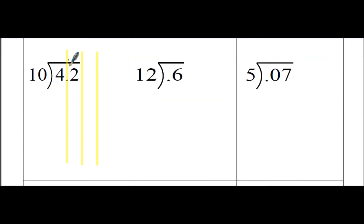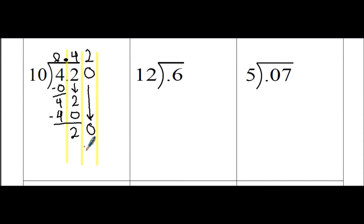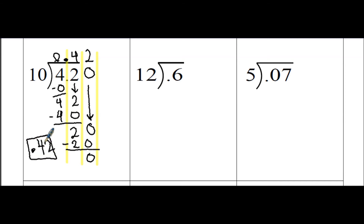10 is already a whole number, so we're not going to move the decimal at all — just bring it up in that column. 10 goes into 4 zero times; 0 times 10 is 0, leaving 4. Bringing the 2 down: 10 goes into 42 four times, 4 times 10 is 40 with 2 left over. We write in a 0 as a place holder and bring it down. 10 goes into 20 two times; 2 times 10 is 20 with 0 left over. So 0.42, or 42 hundredths, is your final answer.